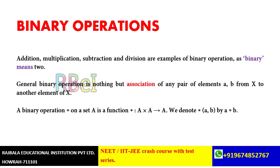Now if I add one and two, I get three. So the result of the binary operation on one and two is three, which is present in our set. Since the resultant is also present in the same set, it is called a binary operation.